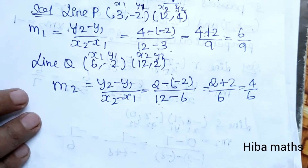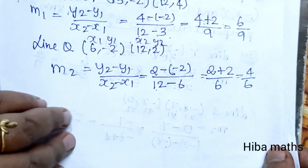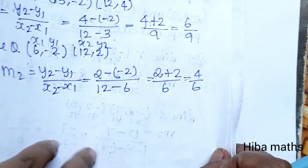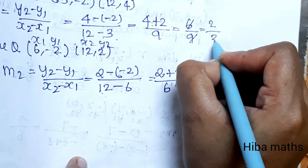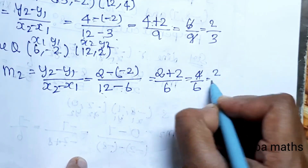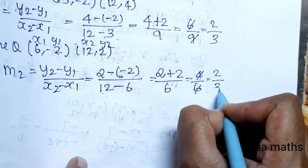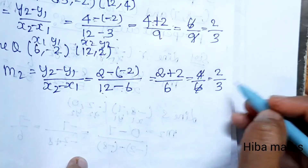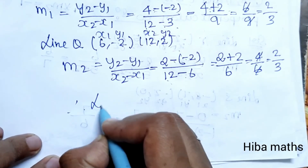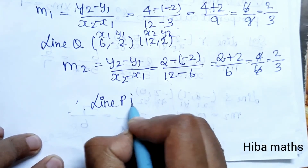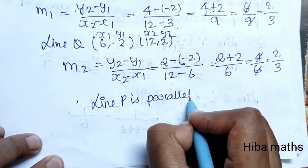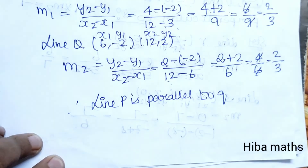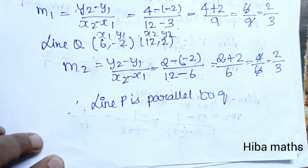Simplifying both slopes: M1 = 6/9 = 2/3 and M2 = 4/6 = 2/3. Since M1 equals M2, line P is parallel to line Q. Thank you so much for watching.